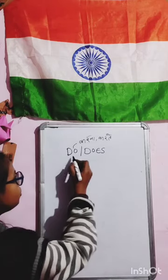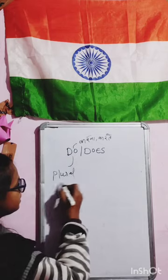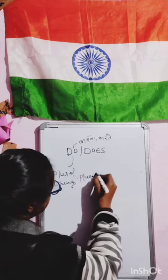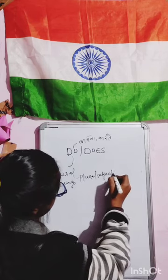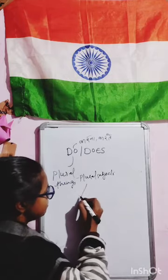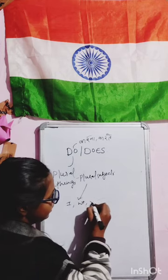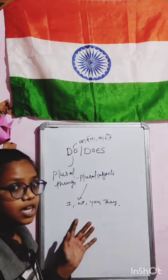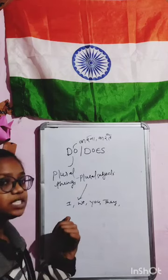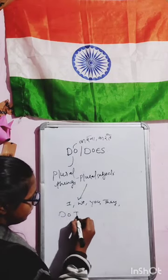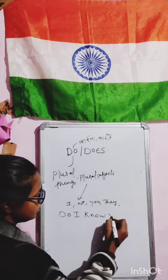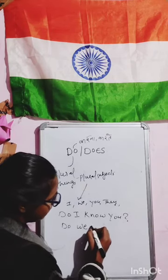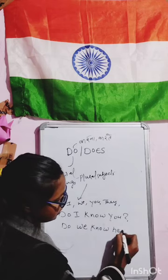First of all, we use 'do' for plural subjects. Plural subjects are: I, we, you, and they. These are some examples of plural subjects. For example: 'Do I know you?' and 'Do we know her sister?' We can make sentences with 'you' and 'they' as well.